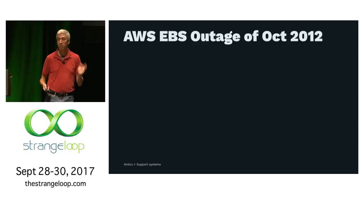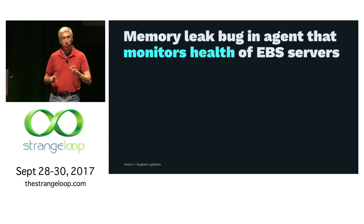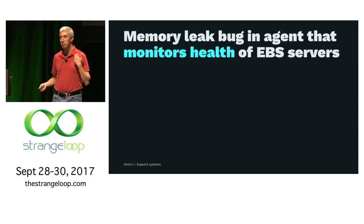Another example from Amazon: about five years ago they had an EBS outage — elastic block storage, their persistent disk system. When US-East-1 in one availability zone went out, there were multiple contributory factors, but the most interesting was a memory leak bug in the agent that monitors the health of the EBS service. This is a system that doesn't provide EBS functionality but makes sure EBS is working properly — and that system failed, leading to the outage.